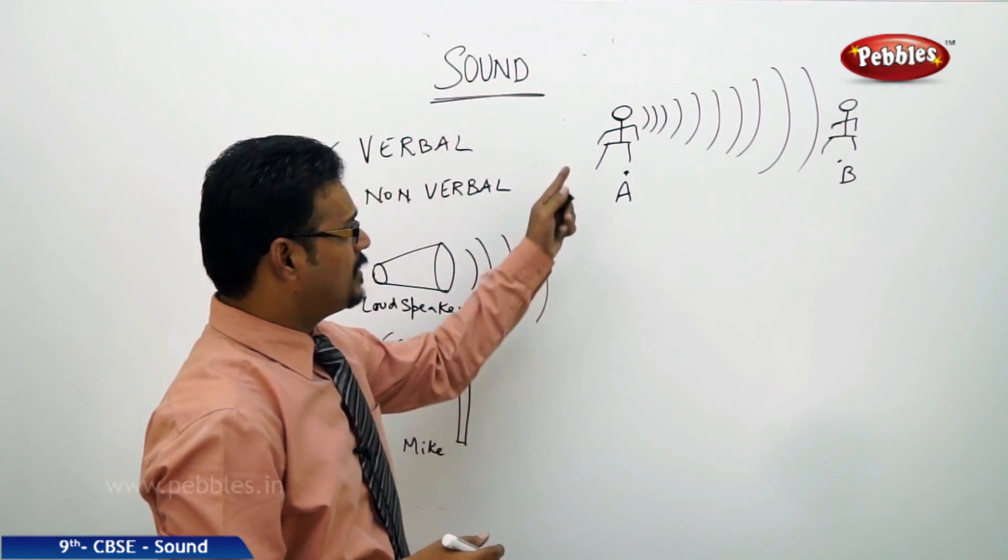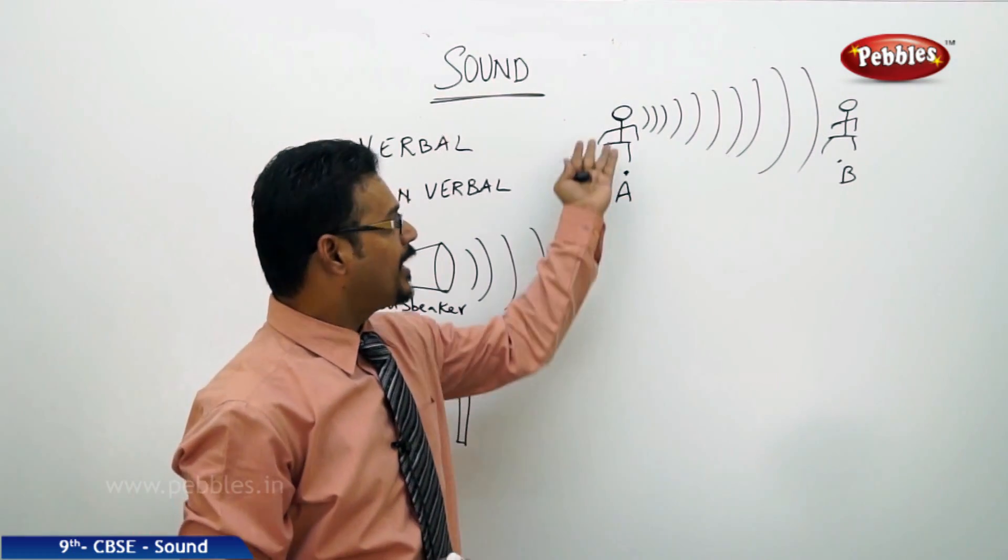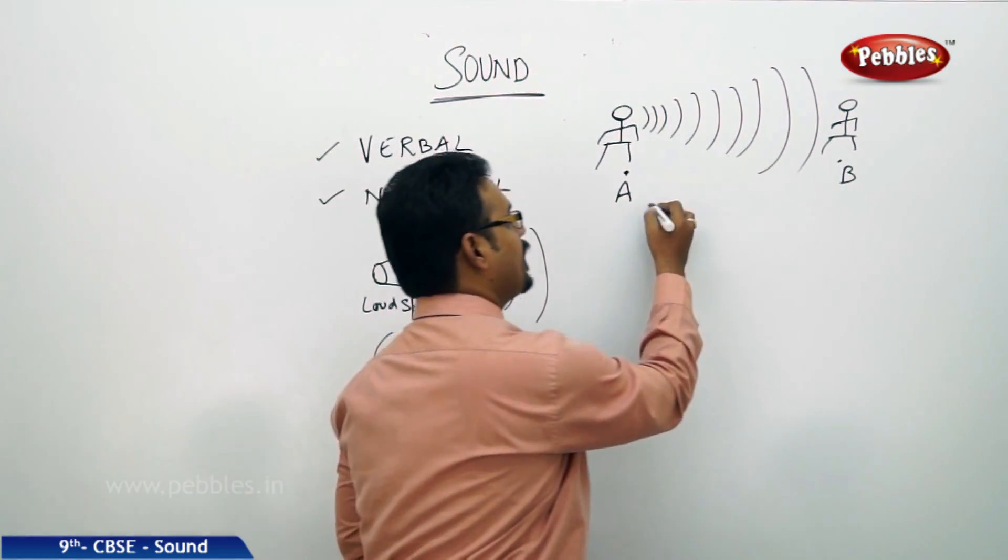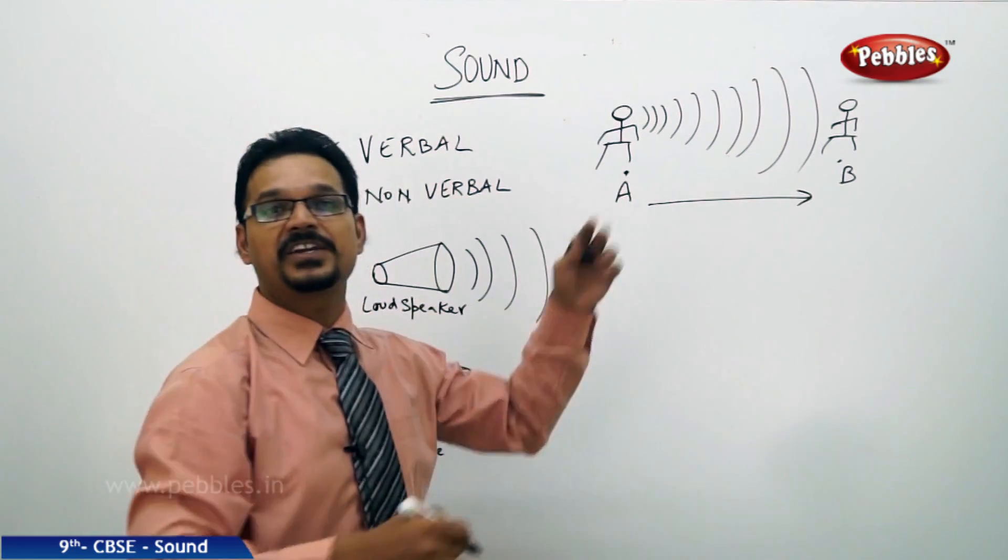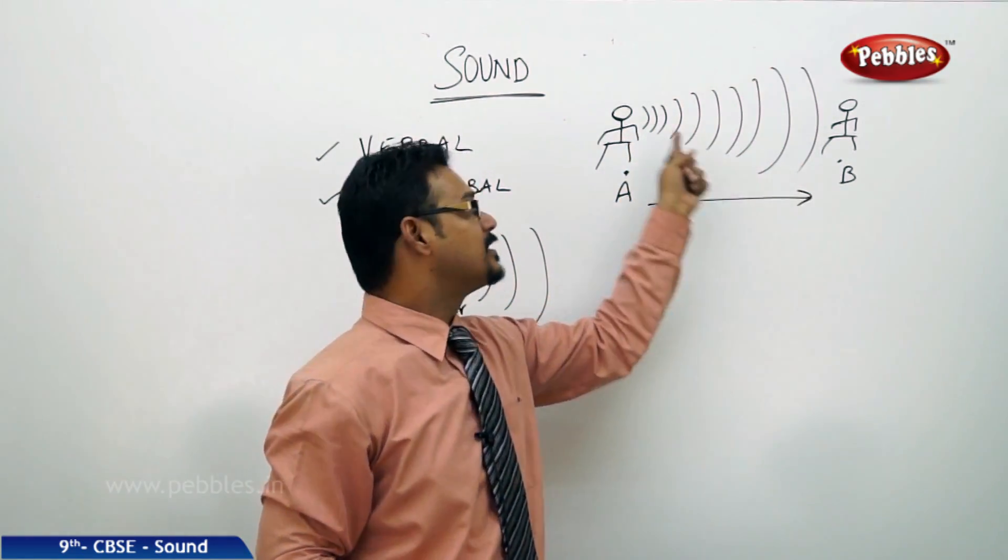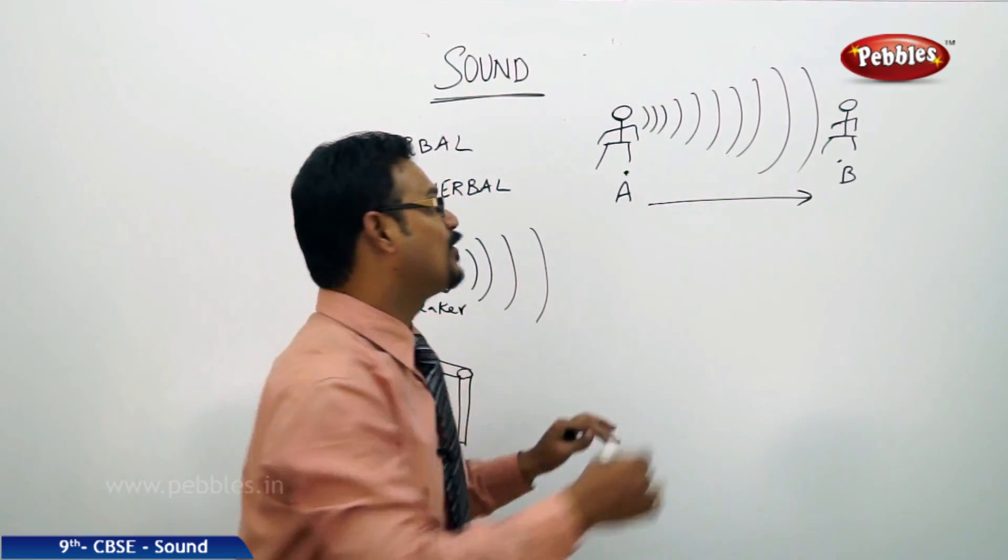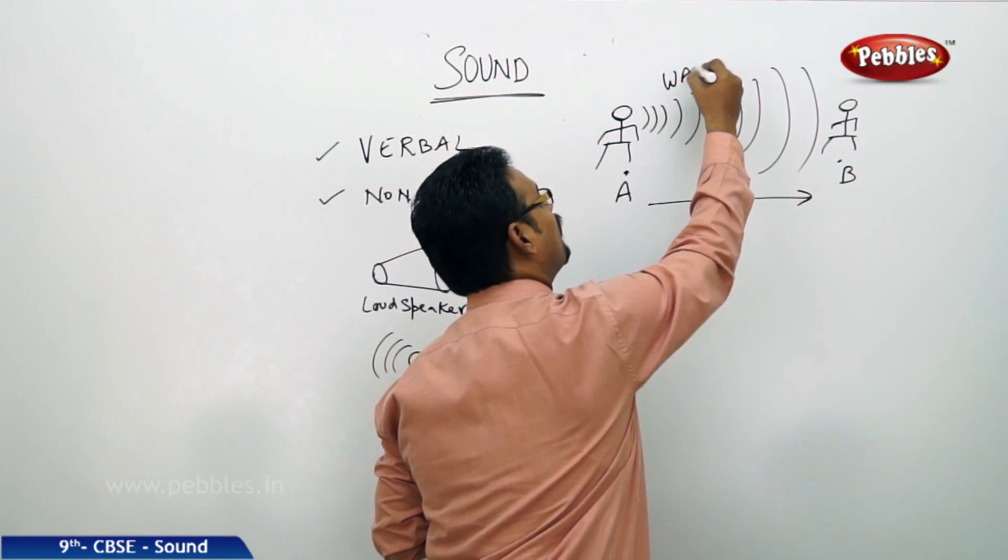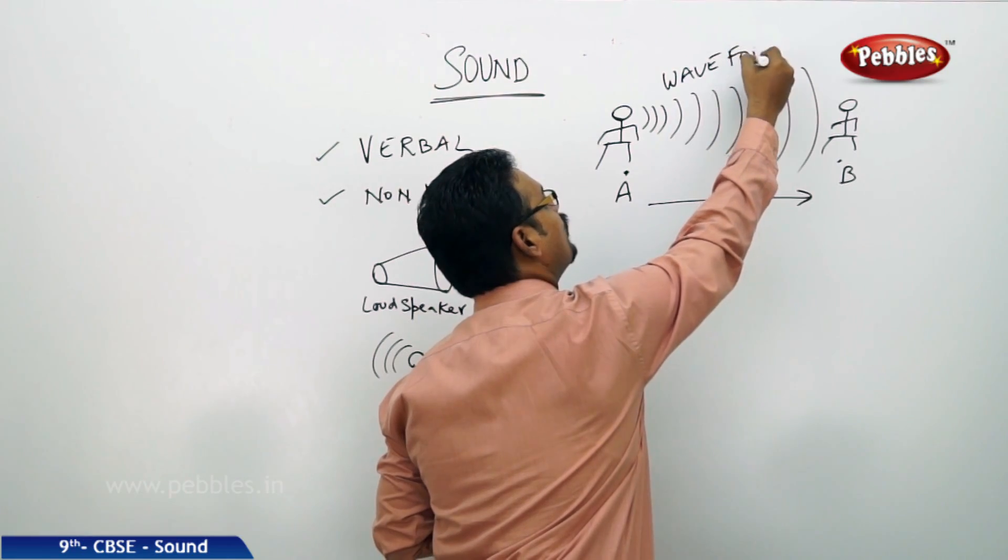And the sound, so generally if you want to draw a diagram, you draw a diagram like this. The sound is going from one point to the other point in this direction. What is symbols called. This semicircles are called waveform. Waveform.